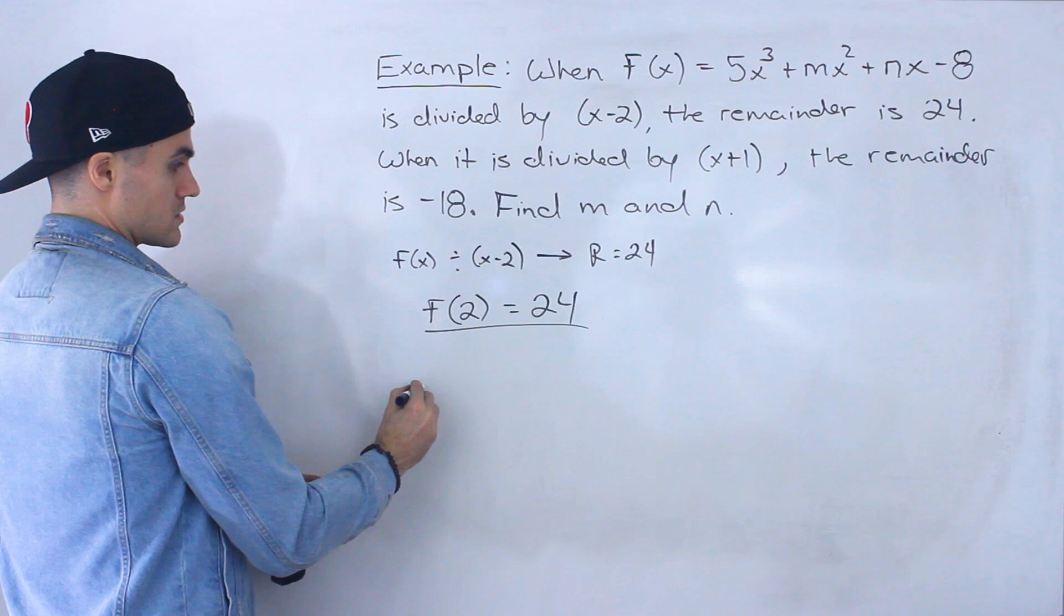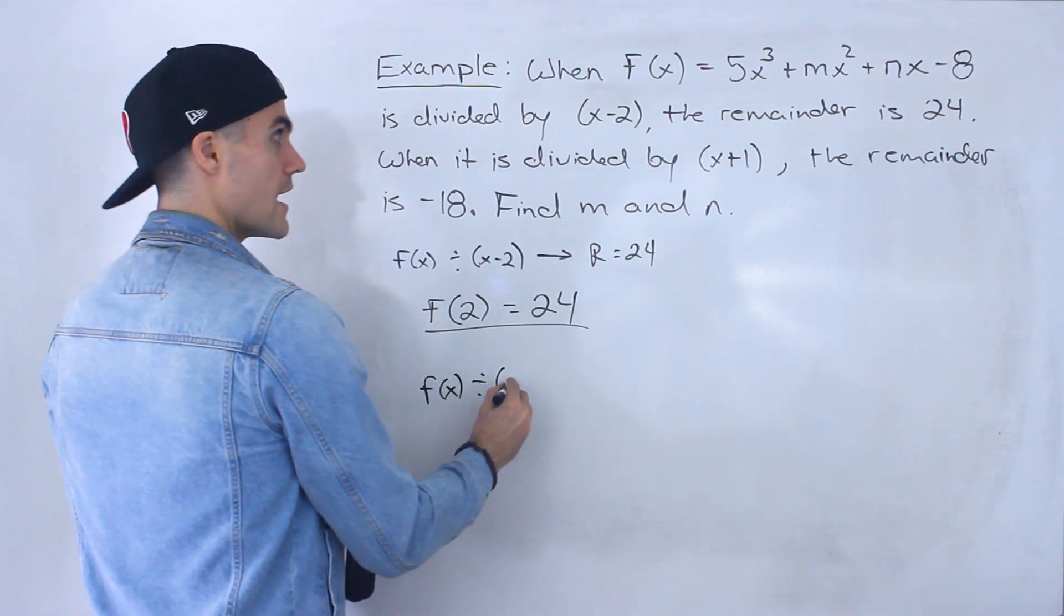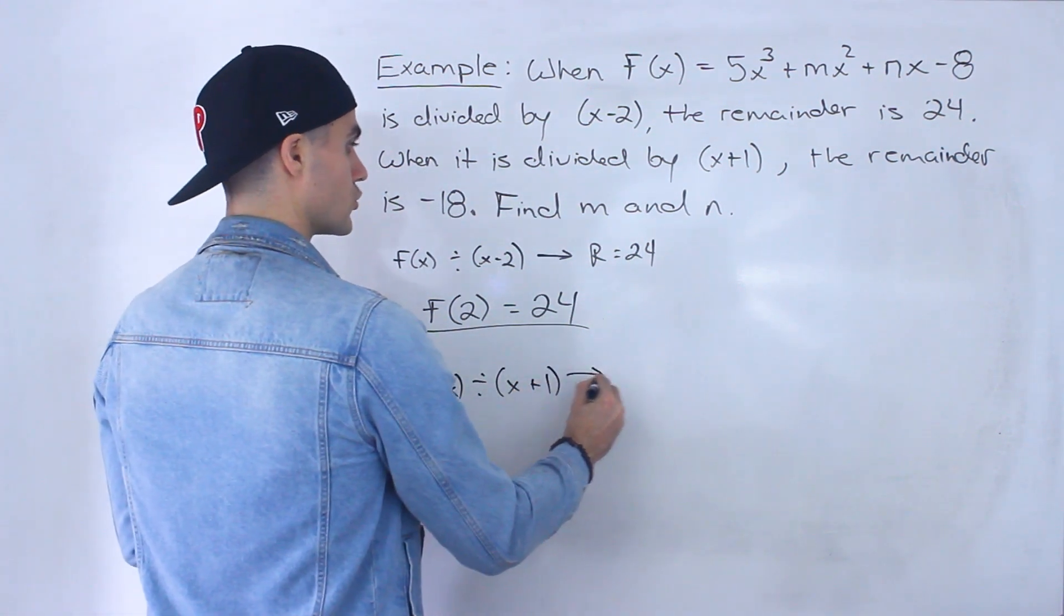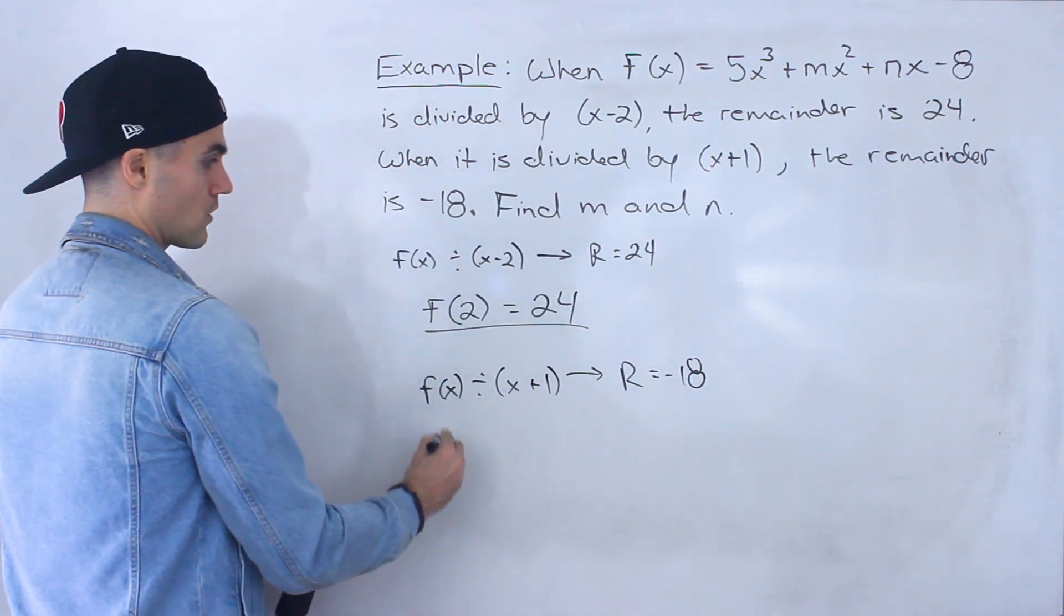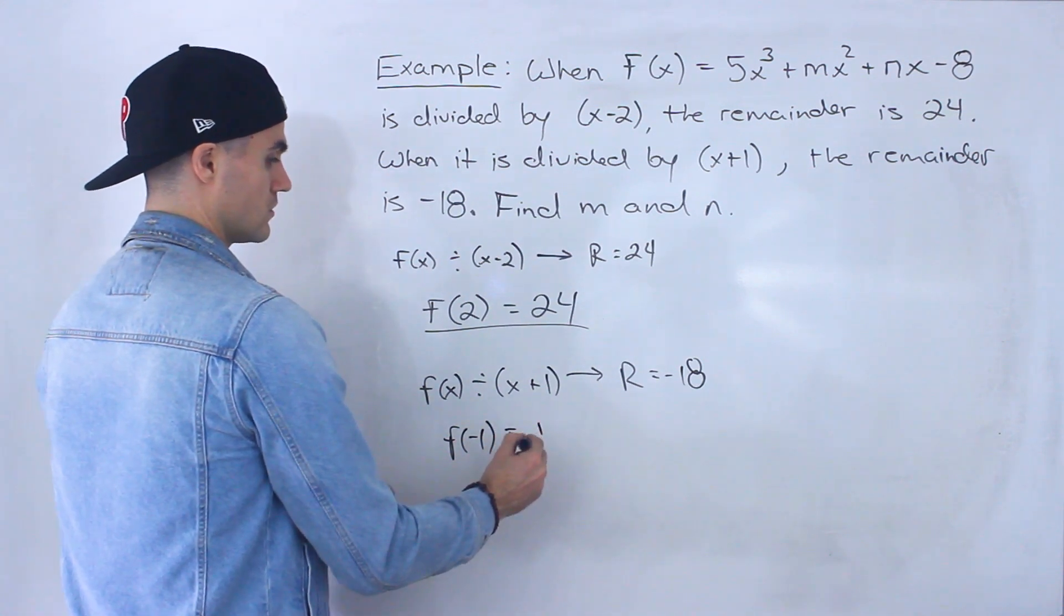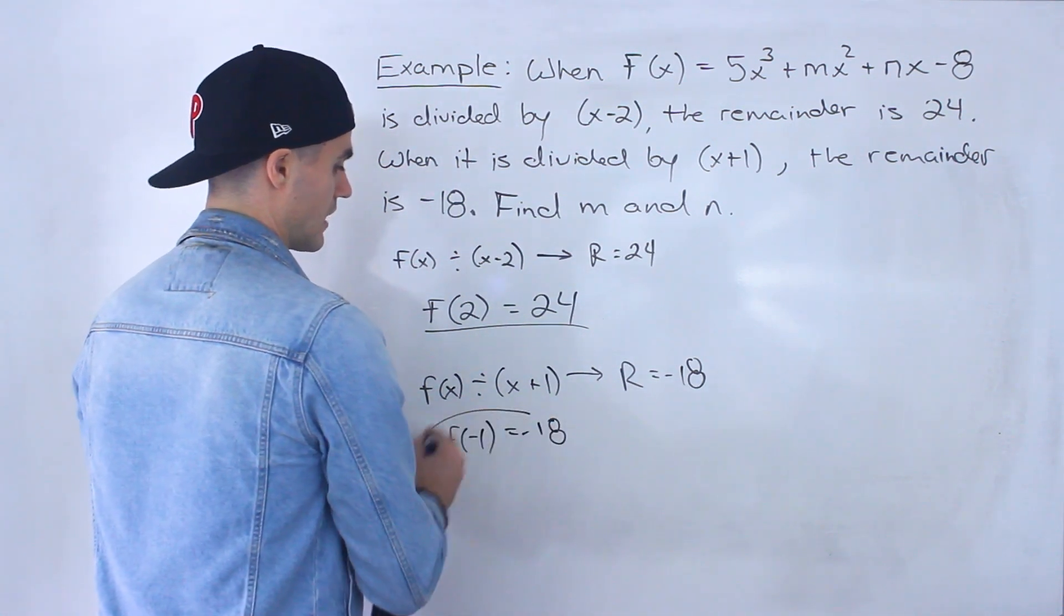And then we're also told that if f(x) is divided by x + 1, the remainder is negative 18. Well, from this statement, we know f(-1) has to equal negative 18.